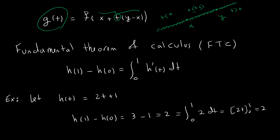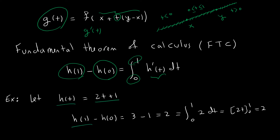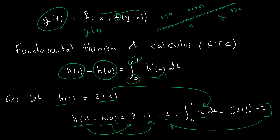Now I want to go over the fundamental theorem of calculus, because we want to take the derivative g'(t). The fundamental theorem of calculus says h(1) minus h(0) equals the integral from 0 to 1 of the derivative of the function. As an example, take h to be 2t plus 1: h(1) is 3, h(0) is 1, and that equals 2. The derivative of 2t+1 is 2, and the integral from 0 to 1 of 2 is also 2. We will use this to calculate g(t).